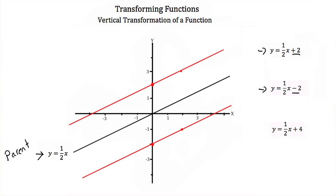Let's look at these lines. You'll notice that they have the same slope, so they're parallel lines. Because we've added 2, every point on y equals one-half x plus 2 is just 2 higher than our parent function. And when we subtracted 2, every point is just 2 less than our parent function.